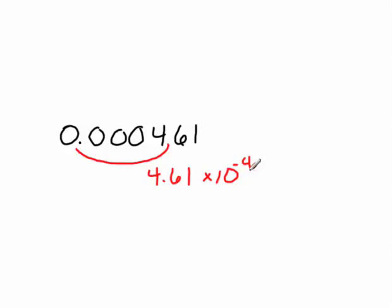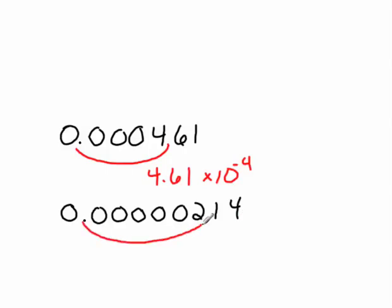A second example of the same process would be this number in decimal notation: 0.0000214. Again, I need to move the decimal after the first number from the left that's not a zero, which means after the two. So now it says two and fourteen hundredths times ten.